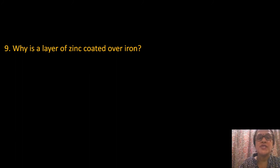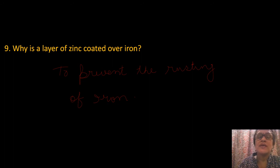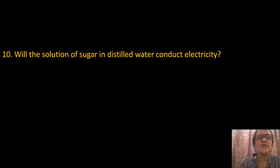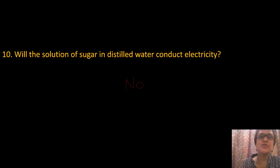Next question: Why is a layer of zinc coated over iron? To prevent rusting of iron, zinc is coated over it. If zinc is coated over iron, the iron will not be exposed to humid air — the factor responsible for rusting — and so rusting of iron can be prevented. The solution of sugar in distilled water will not conduct electricity, as it does not consist of any ions responsible for conduction.